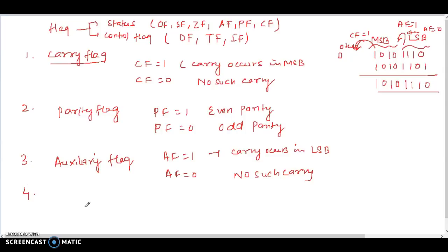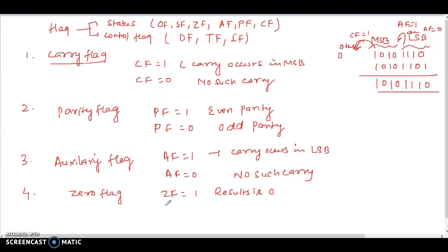The fourth flag is the zero flag. If the result is zero, then the zero flag is 1. ZF is equal to 1 if the result is completely zero. Otherwise the zero flag is 0 if the result is not equal to zero.